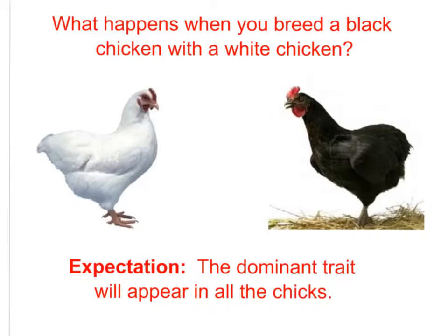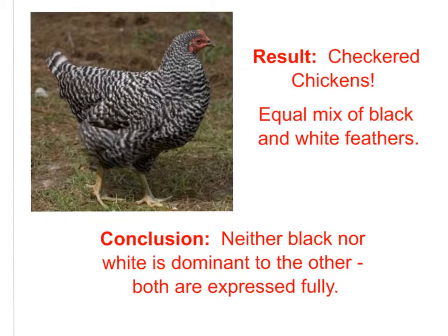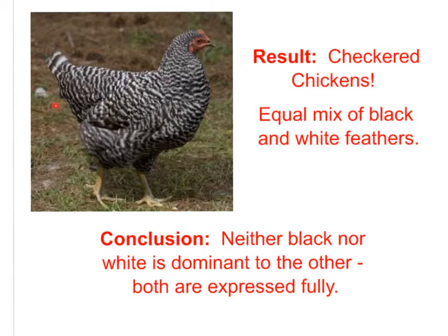Now let's look at a different example. What happens when we breed a black chicken and a white chicken? If they followed simple Mendelian genetics, we'd expect the dominant trait in all the little chicks. But the result is something totally unexpected — we get a checkered chicken. That chicken does not look like what we were expecting. The inheritance here is not following simple Mendelian genetics. We can see an equal mix of both black and white feathers, and we can conclude that neither black nor white is dominant over the other because both are being fully expressed in that offspring.